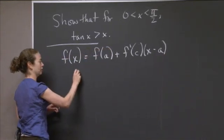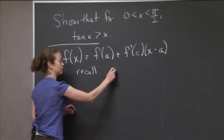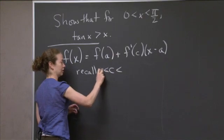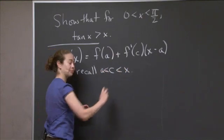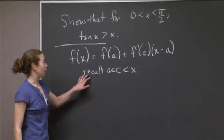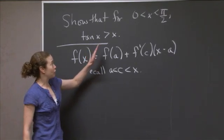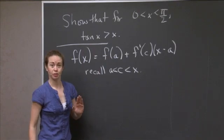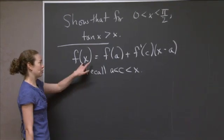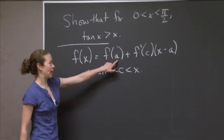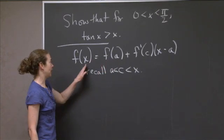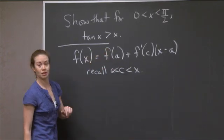And here, remember, c has to be between a and x. So in this case, what we want to consider is the region from 0 up to some x value. If you think about it, a will be 0, and x will be the right-hand endpoint, always less than π/2.